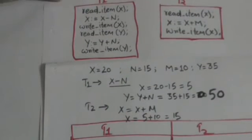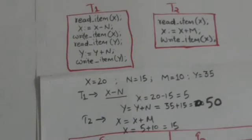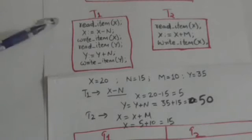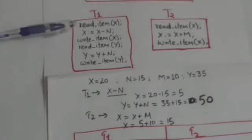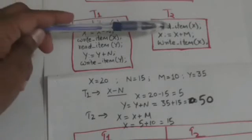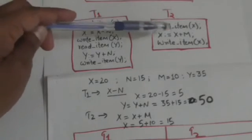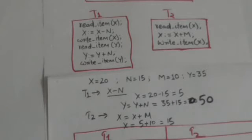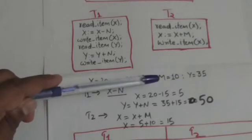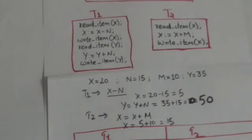We will discuss one such problem. Consider two transactions T1 and T2. Transaction T1 subtracts n from x and adds n to y. Transaction T2 adds m to x. Suppose the value of x is 20, n is 15, m is 10, and y is 35.